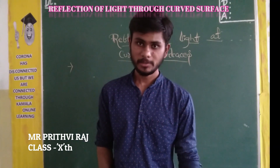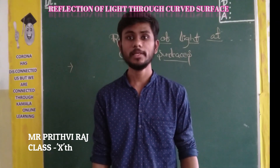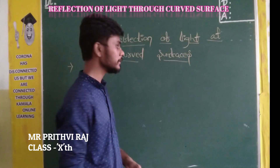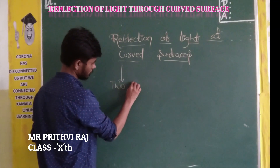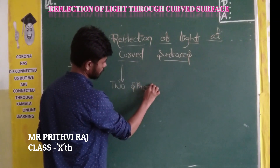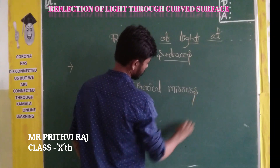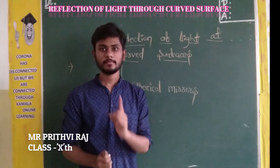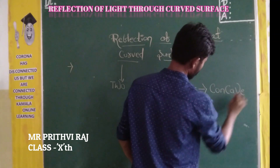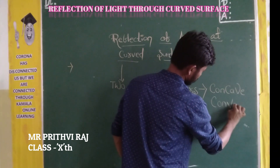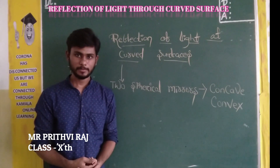In this concept we will learn about spherical mirrors — what they are, how many types there are, what kind of images they give, and what the properties of those images are. We have two kinds of spherical mirrors: the first one is a concave mirror, and the second one is a convex mirror.